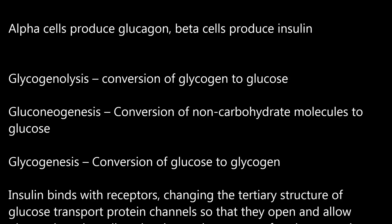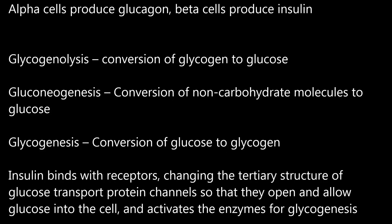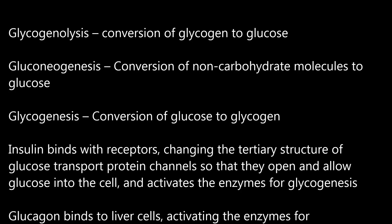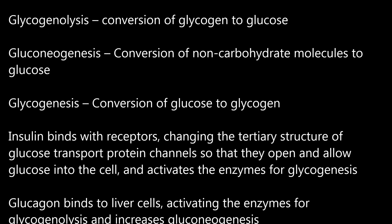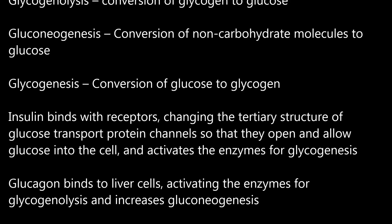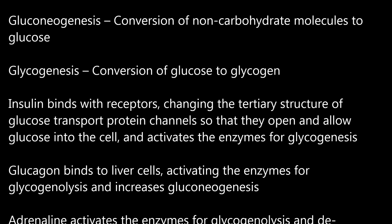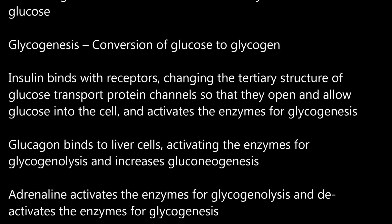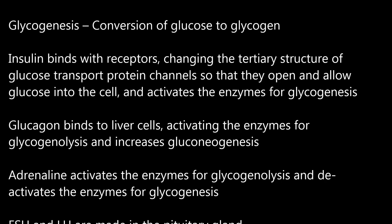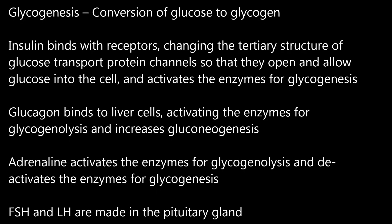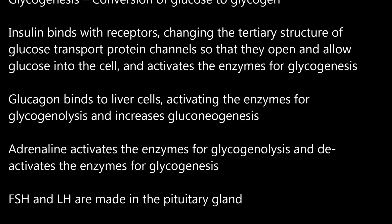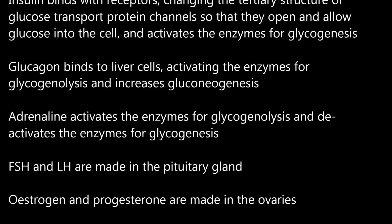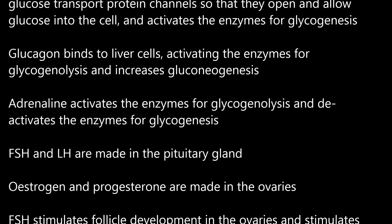Glycogenolysis: the conversion of glycogen to glucose. Gluconeogenesis: the conversion of non-carbohydrate molecules to glucose. Glycogenesis: the conversion of glucose to glycogen. Insulin binds with receptors, changing the tertiary structure of glucose transport protein channels so that they open and allow glucose into the cell, and activates the enzymes for glycogenesis. Glucagon binds to liver cells, activating the enzymes for glycogenolysis and increasing gluconeogenesis.